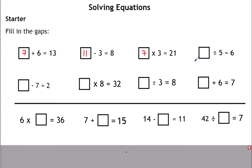Something divided by 5 is 6 — it must be quite a big number because when you divide it by 5 the answer is 6. Swap it around and do the opposite: 6 times 5 is 30. Something take away 7 is 2 — swap it around and do the opposite: 2 add 7 is 9. Something times 8 is 32 — swap it around and do the opposite: 32 divided by 8 is 4. Something divided by 3 is 8 — swap around: 8 times 3 is 24. Something add 6 is 7 — it must be a small number; 7 take away 6 is 1.